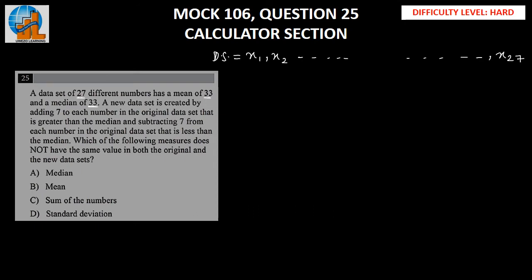We know that the median of these 27 terms is 33. To find the median term, it has to be the total number of terms plus 1, divided by 2. Since the number of terms is odd — and 27 is odd — our median term is the 14th term.